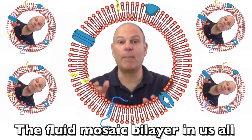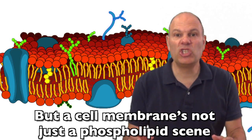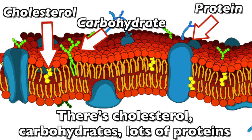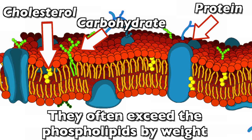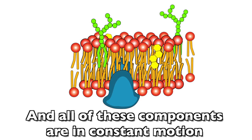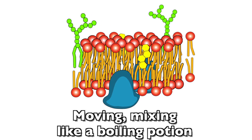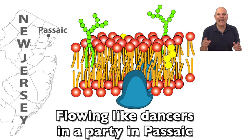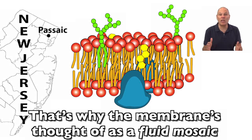But a cell membrane's not just a phospholipid scene. There's cholesterol, carbohydrates, and lots of proteins. In fact, membrane proteins have a presence so great they often exceed the phospholipids by weight. And all of these components are in constant motion — moving, mixing like a boiling potion, flowing like dancers in a party. That's why the membrane's thought of as a fluid mosaic.